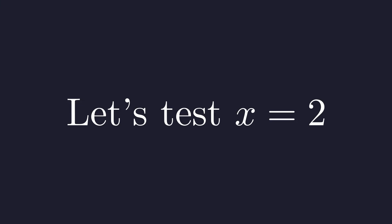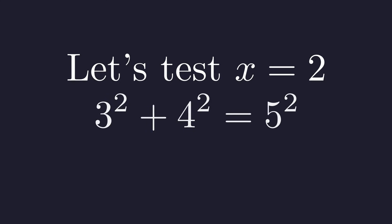We'll substitute 2 for x everywhere in our original equation. This gives us 3 squared plus 4 squared equals 5 squared.